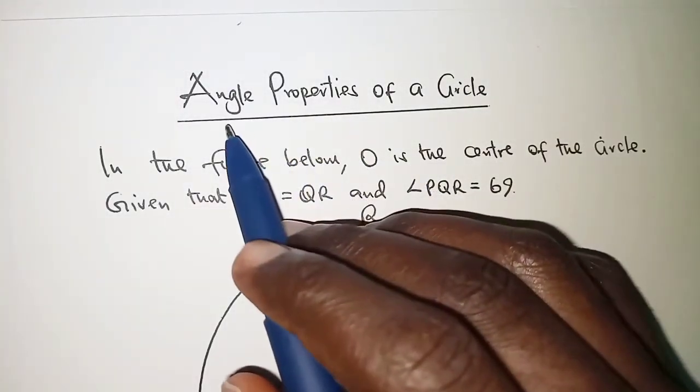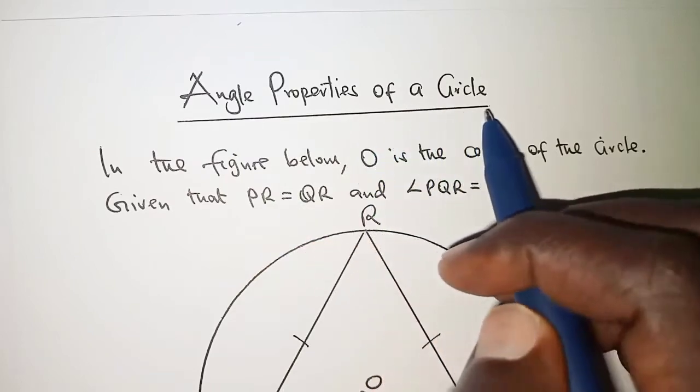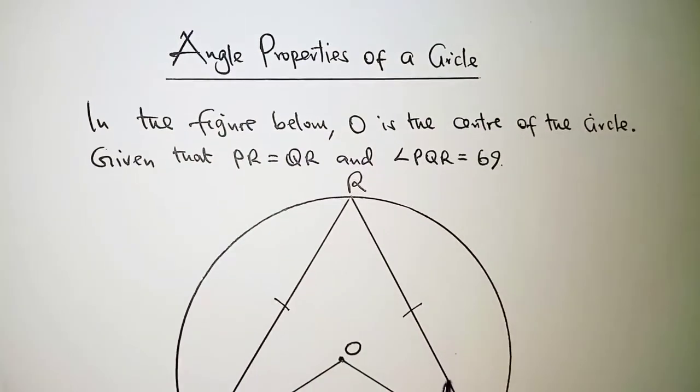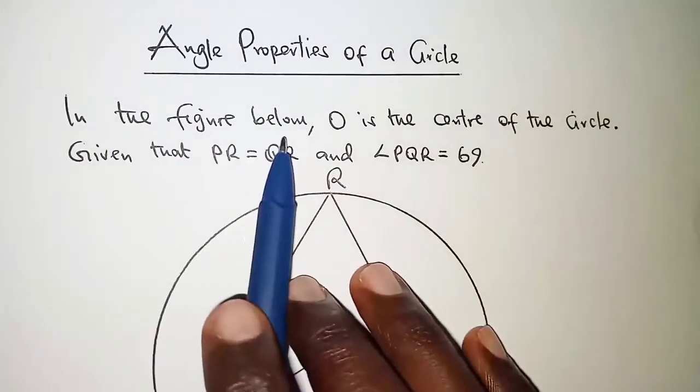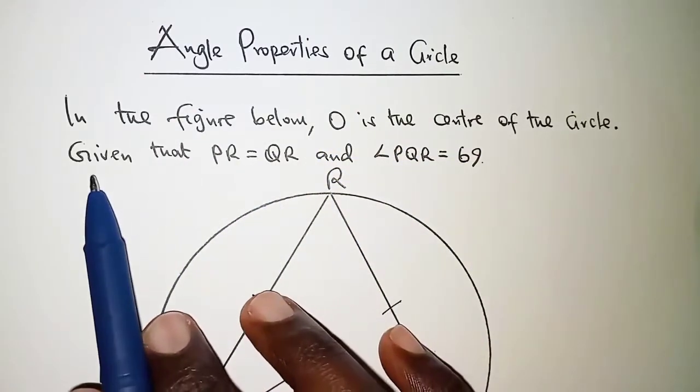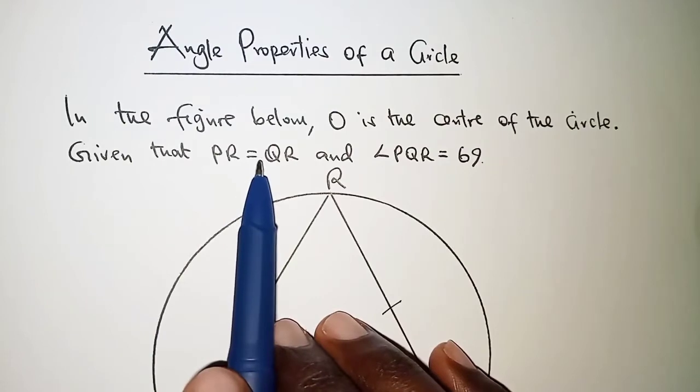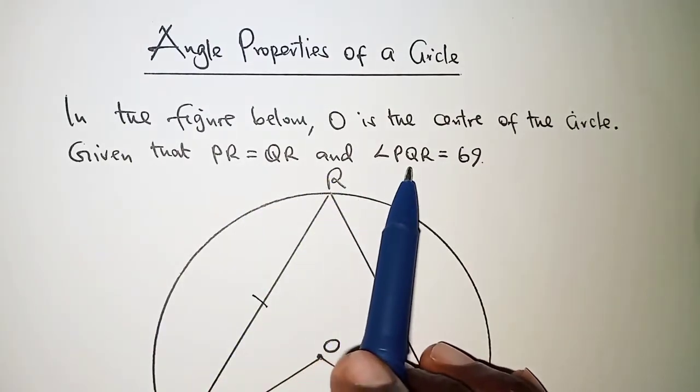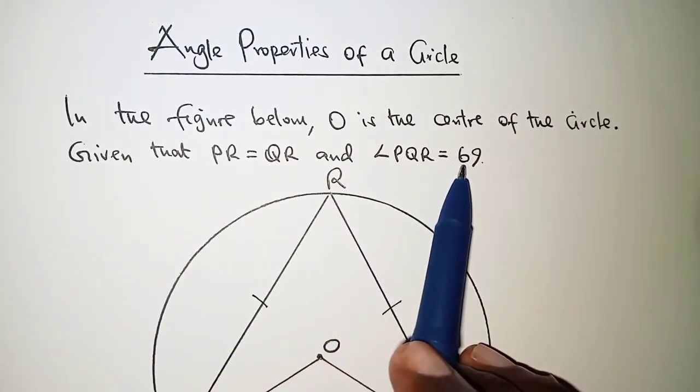Welcome. Today's presentation is on angle properties of a circle. The question we have here reads: in the figure below, O is the center of the circle.